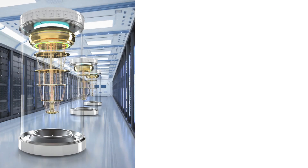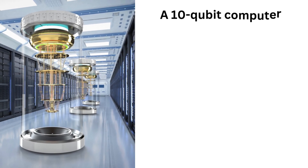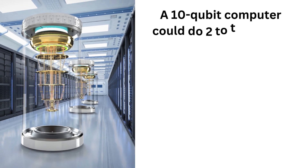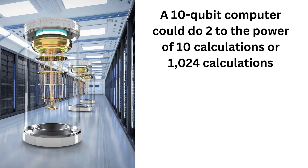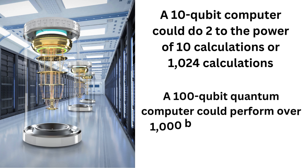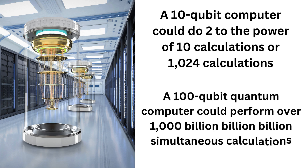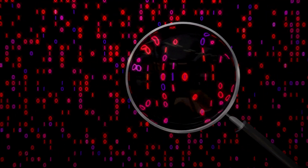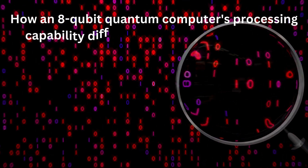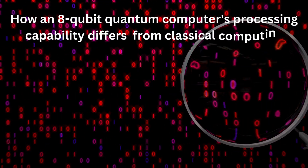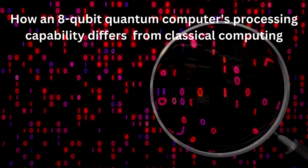On the other hand, a 10-qubit computer could perform 2 to the power of 10, or 1,024 calculations simultaneously. A 100-qubit quantum computer could perform over 1,000,000,000,000,000,000,000 simultaneous calculations. Let's take a closer look at how an 8-qubit quantum computer's processing capability differs significantly from classical computing.